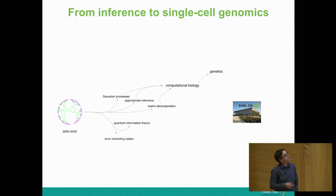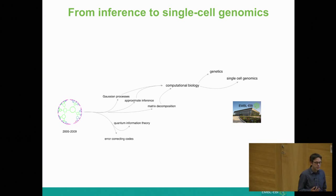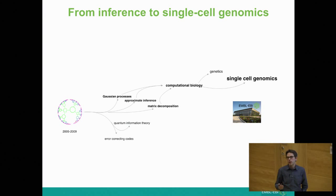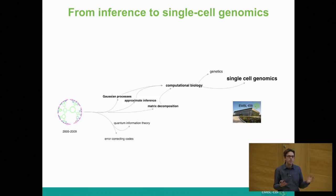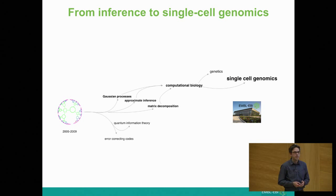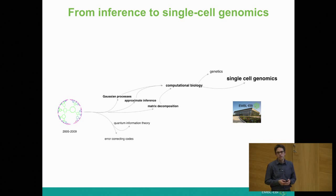Carl Rasmussen's work on Gaussian processes was very influential — the book had just come out at the time — and there was this converging theme that computational biology was a really exciting application to bring together many of the research themes going on. We went on to genetics on one hand, and then most recently — that's work we're now doing at EBI — to single cell biology. I want to focus on that topic on the right, and highlight how it links to all these other elements: computational biology and matrix decomposition.